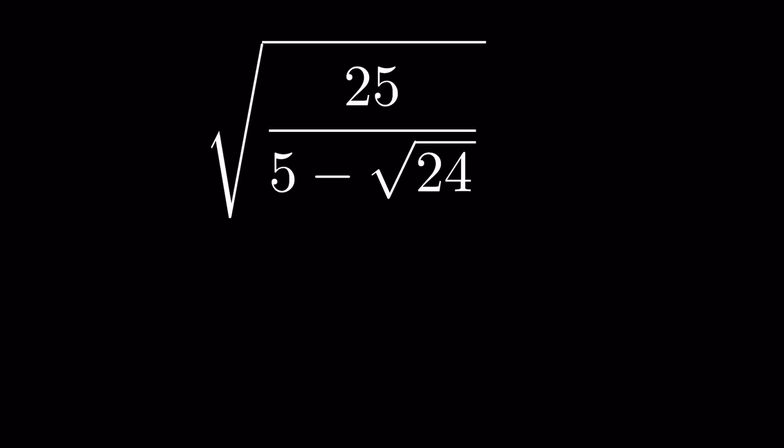We have the expression 25 upon (5 minus square root of 24), all under a square root. How do we simplify it?